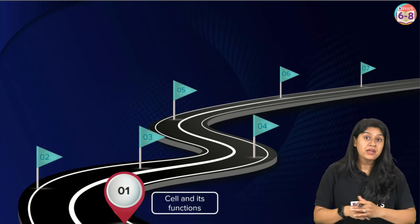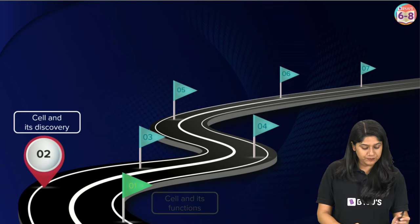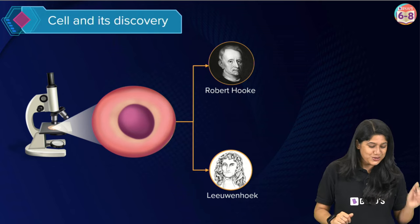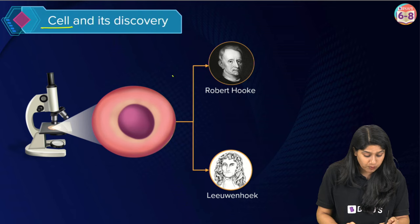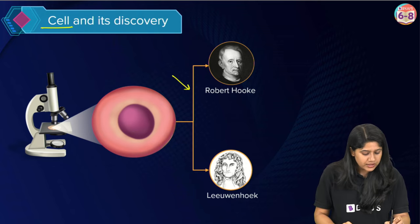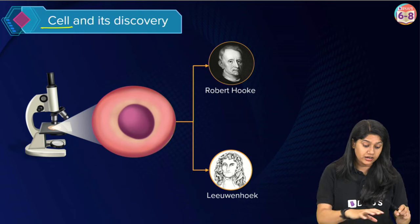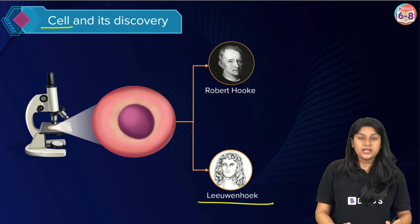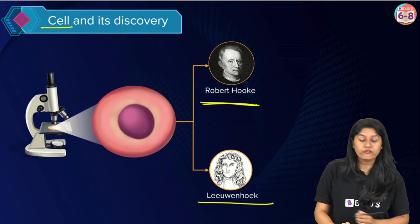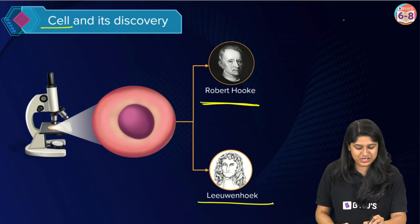Now we will be discussing the next important topic: the cell and its discovery. Cell was first discovered by Robert Hooke in the year 1665. He observed it in a dead bark and saw small prism-shaped structures, which is why he named them cells. After a few years, Anton Leeuwenhoek was the one who observed the first living cell. Please make sure you remember the names of these scientists as they are important from the exam point of view.